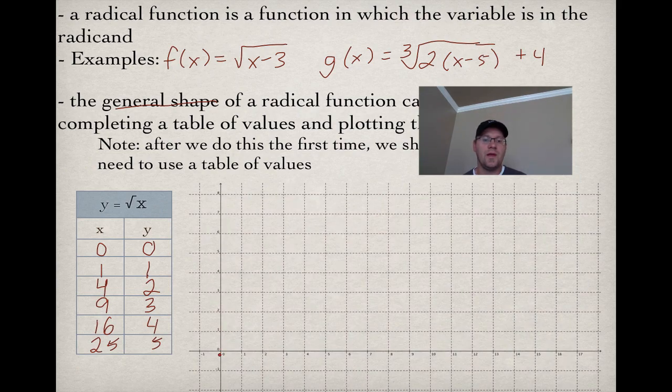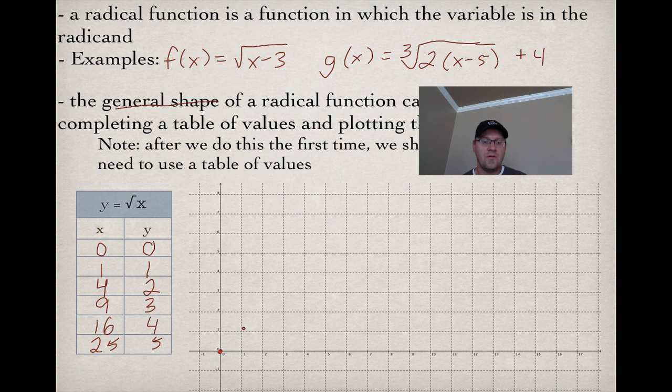So let's take a look at what this would look like. Here we've got a coordinate plane. So I'll plot (0,0), (1,1), (4,2), (9,3), and (16,4). I can't fit that last point in there. That's fine because we now know the general shape.